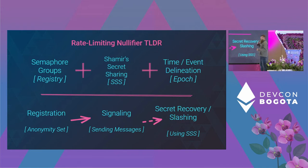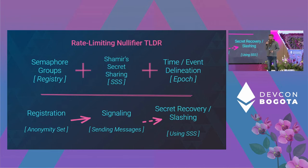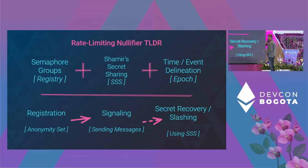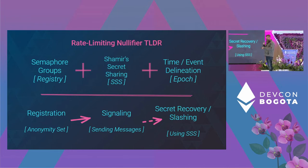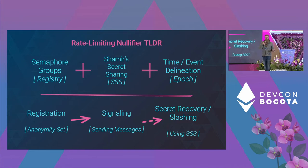There are kind of three stages to how RLN works: there's a registration process, like joining, which is basically just a Merkle tree; signaling, which is your actual sending of messages; and then there is the slashing or secret recovery.